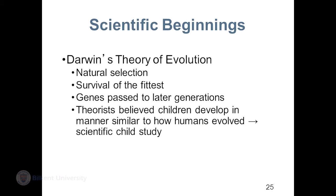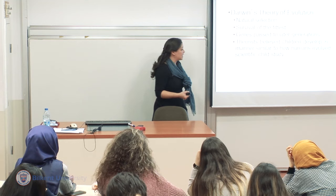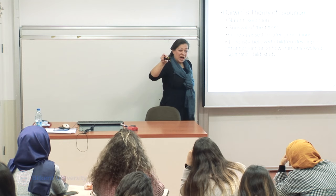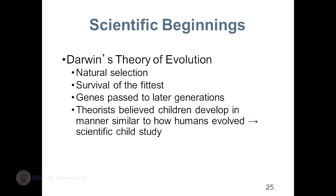Darwin then started the scientific revolution. In his theory of evolution, he watched different organisms from birth until adulthood. His famous concepts of natural selection and survival of the fittest highlighted the biological component — genes passed from one generation to the next. Some theorists got the idea that by watching how children develop, we could see how humans evolved. This was later abandoned, but it caused different theories and research to be carried out with children.